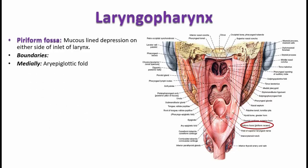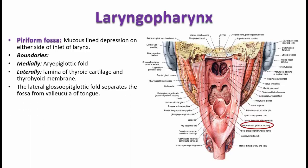You can see the aryepiglottic fold — the fold extending from the arytenoid cartilage to the epiglottis. This fold is called the aryepiglottic fold. So laterally, the lamina of the thyroid cartilage and the thyrohyoid membrane form the boundary, all covered by mucous membrane.